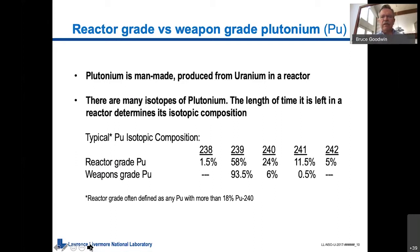Now reactor-grade, it has a lot less 239, about 60 percent, and about a quarter of it is 240, which is the stuff that gives off all of those excess neutrons that are supposedly the problem. In fact, reactor-grade is often defined as any plutonium with more than 18 percent 240. So let's go to the next view graph.